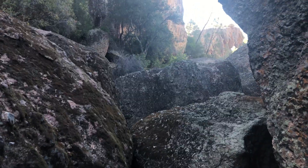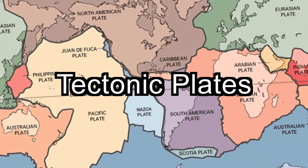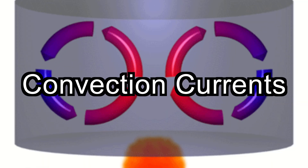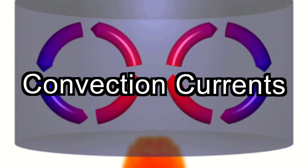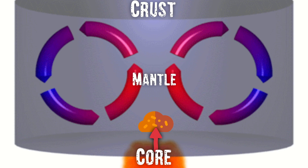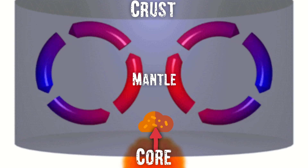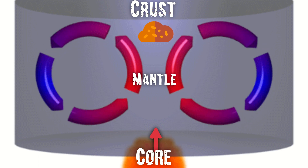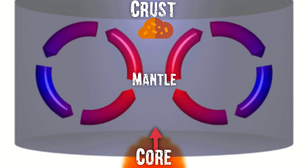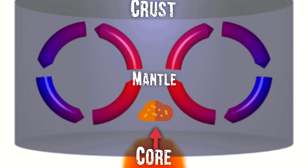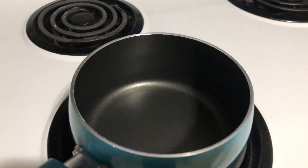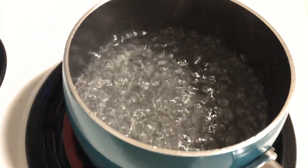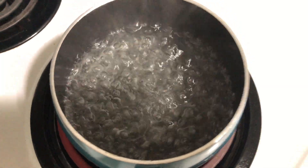Scientists believe that the earth's crust is divided into large areas called tectonic plates. These plates move because of convection currents in the mantle. Materials that are closer to the core heat up, which causes them to rise. As they become farther from their heat source they cool and fall back down toward the core, allowing less dense, hotter material to rise and take its place. This process is similar to a boiling pot on a stove, and these convection currents create movement underneath the tectonic plates which causes the plates to move as well.